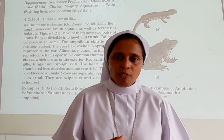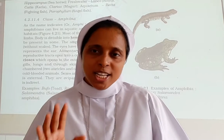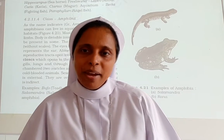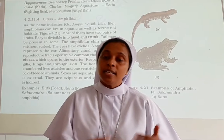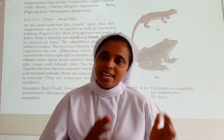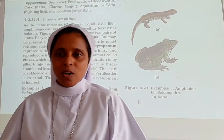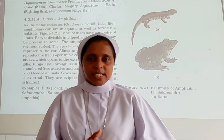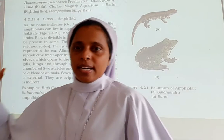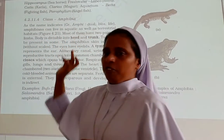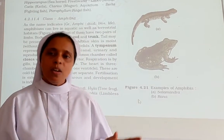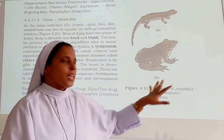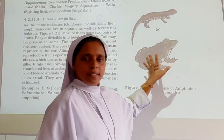To summarize amphibia: they are dual-living — aquatic as well as terrestrial. The body is divided into head and trunk region. They have forelimbs and hind limbs, eyelids, and tympanum instead of an external ear pinna. The alimentary canal and urinary/reproductive tracts all open into a common chamber called the cloaca.